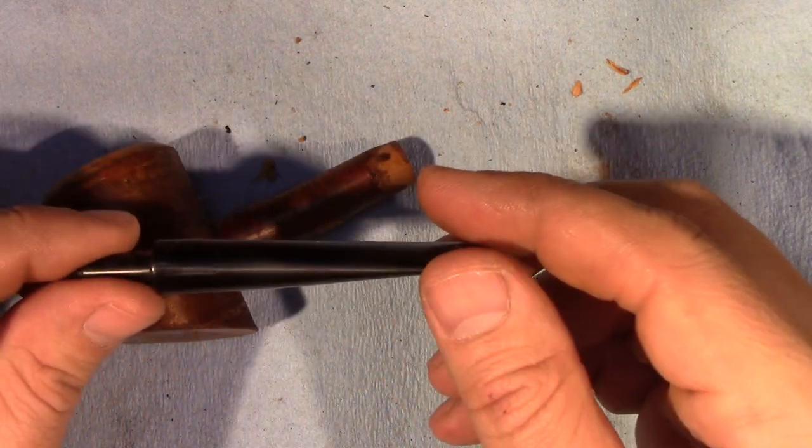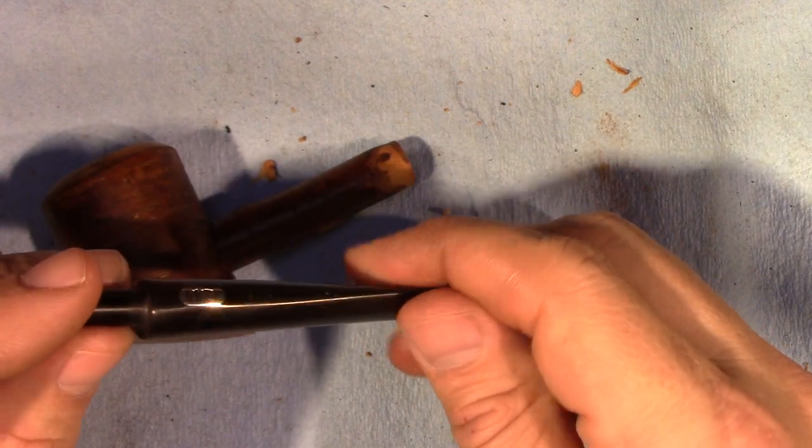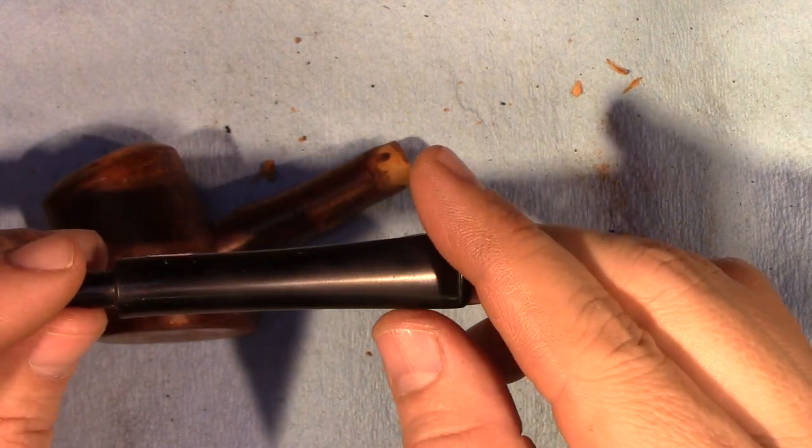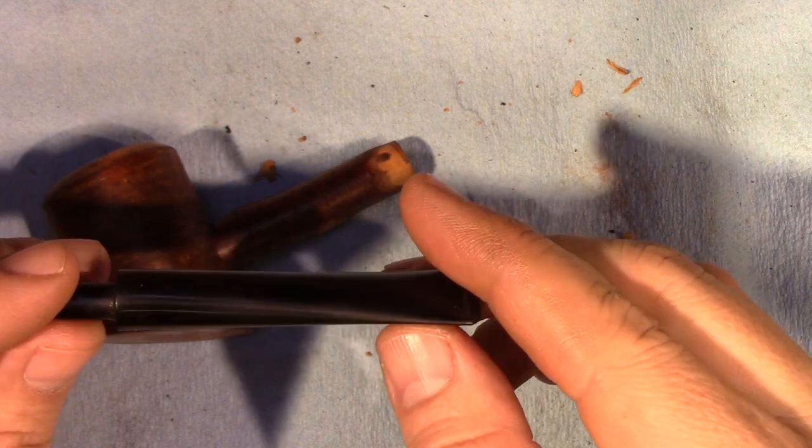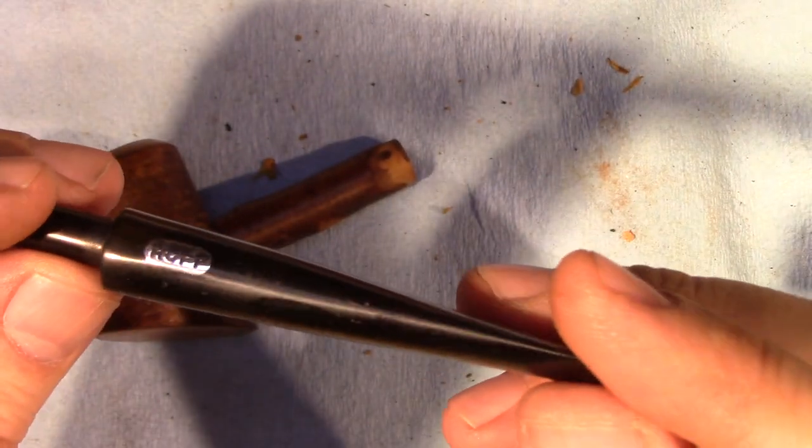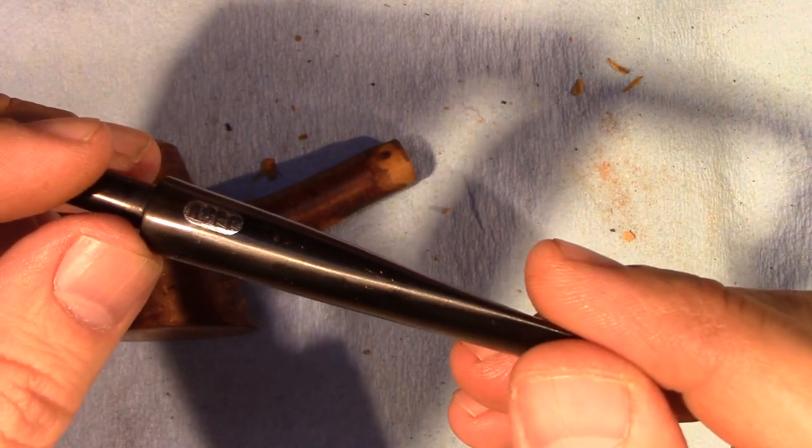When last we saw the stem I had sanded it to 220 and had soaked it in mineral oil. I allowed that to sit for a few evenings. Wiped off the mineral oil, re-sanded it at 220 and then sanded it at 320, 400 and 600.